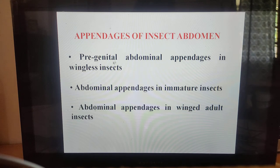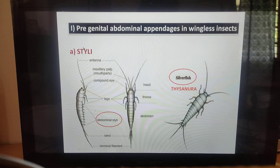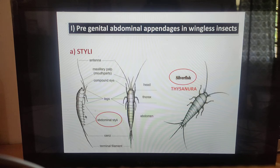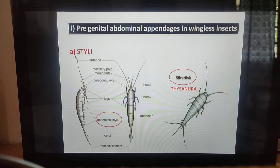The appendages of the insect abdomen consist of pregenital abdominal appendages in wingless insects, abdominal appendages in immature insects, and abdominal appendages in winged adult insects. For pregenital abdominal appendages in wingless insects, styli are present. These styli are paired tube-like structures present on the ventral side of the abdomen of silverfish — reduced or rudimentary abdominal legs which help in locomotion. The styli are present in silverfish, order Thysanura.